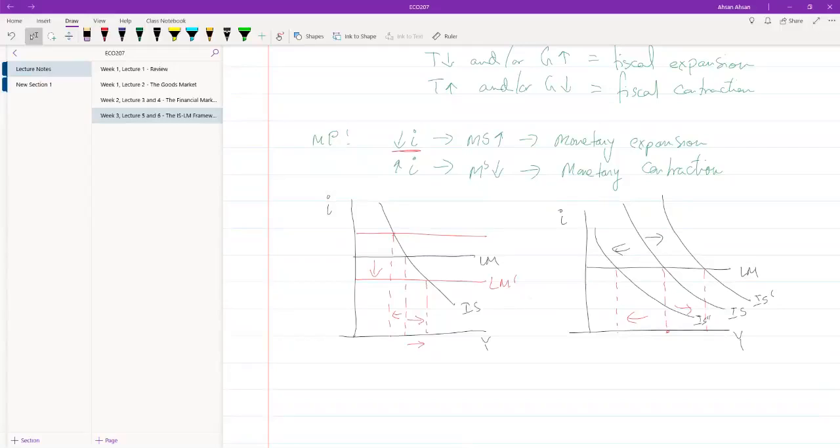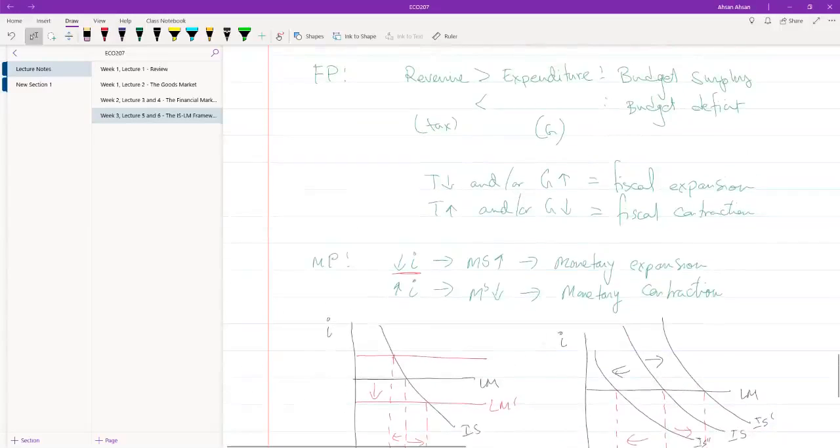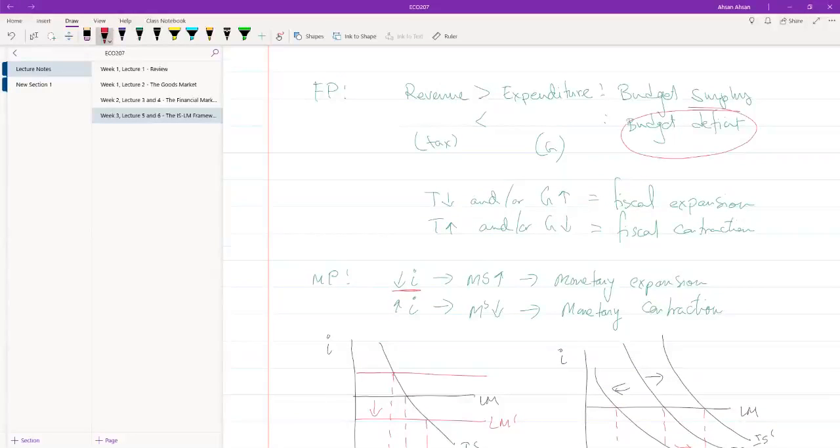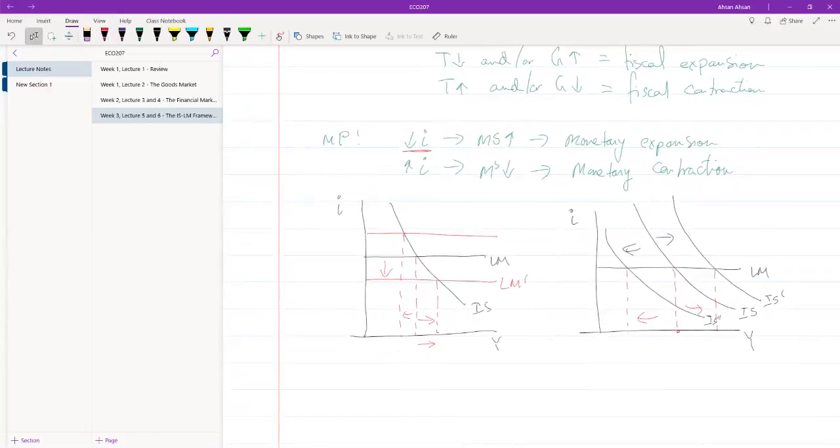And the question is, the way of making fiscal expansion happen is by A, lowering tax and B, increasing government expenditure. Now, as you do this, you're lowering tax, your revenue is falling, but you're also spending more as a government, your expenditure is going up. What will that lead to? That will lead to a budget deficit. And you can't indefinitely increase your deficit. You can't constantly spend more than you earn. You can do it for a short period of time. But sooner or later, this policy is going to be no longer possible. Because budget deficit means you're borrowing from other people.